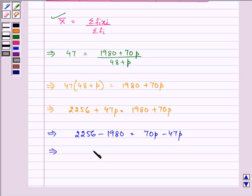That further implies that the value for P is equal to 276 divided by 23.